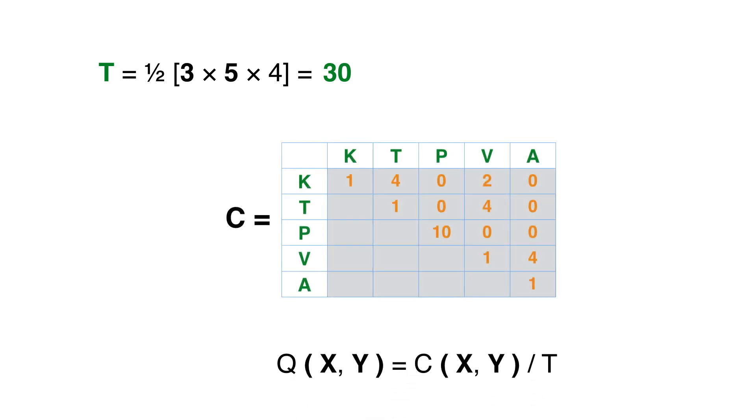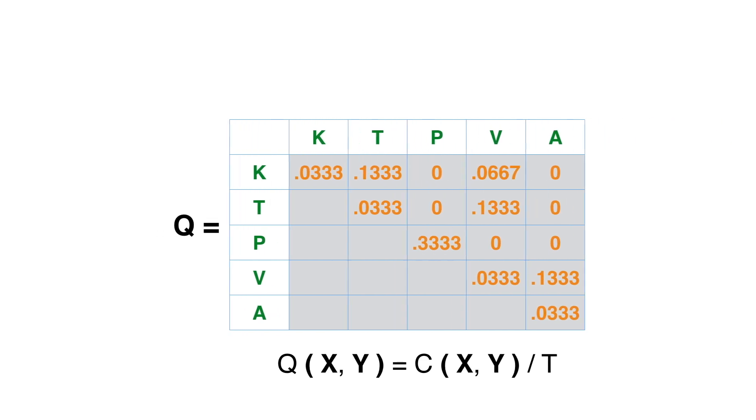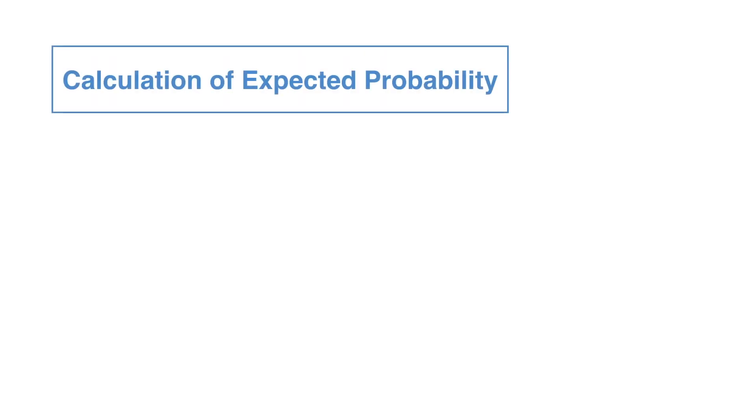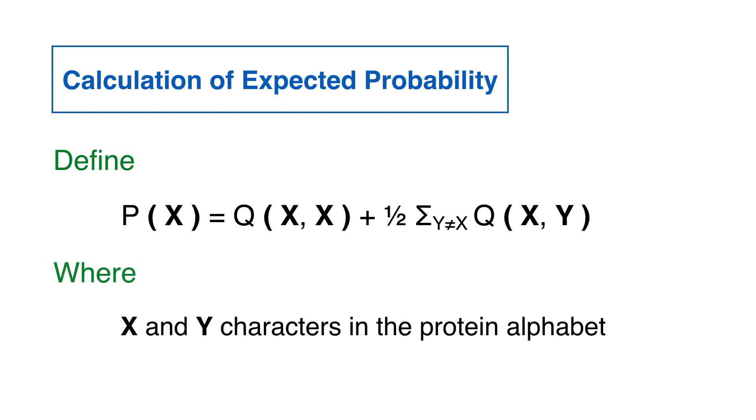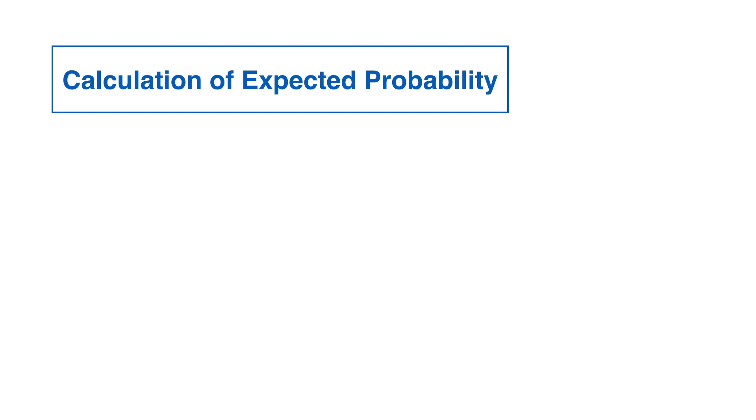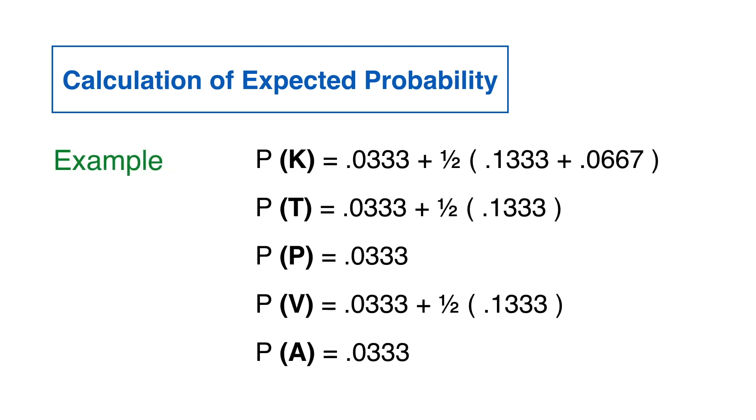After division by the total of possible pairs, T, matrix C is changed to the matrix Q of the frequency of the occurrence of each pair. To complete the log odds ratio calculation, we need the expected probability of the occurrence of each character in the block. These are derived from the matrix of frequencies with the formula above. The expected probability of each character in the block of our example are listed below.